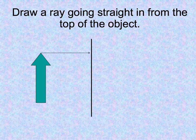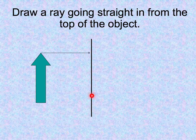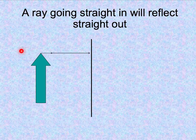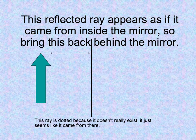Our first ray that we're going to draw is going to go straight in through from the top of our object to the mirror. This line here is going to be our mirror. Light doesn't go through mirrors, it bounces off of mirrors. So that ray that goes straight in is going to bounce straight out. Make sure that this is a 90 degree angle, make sure you go straight into the mirror.